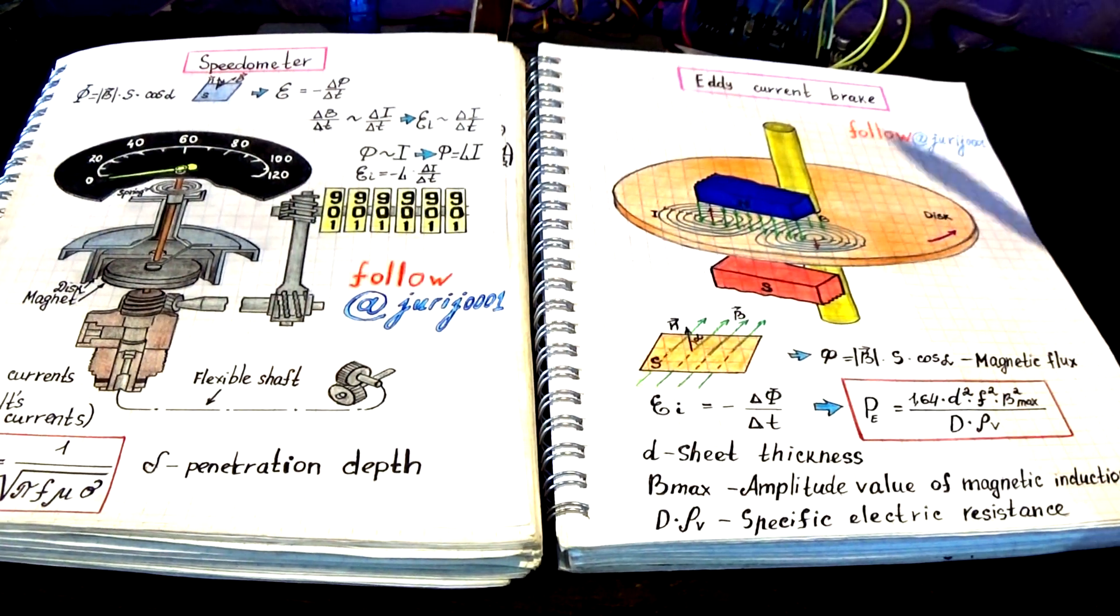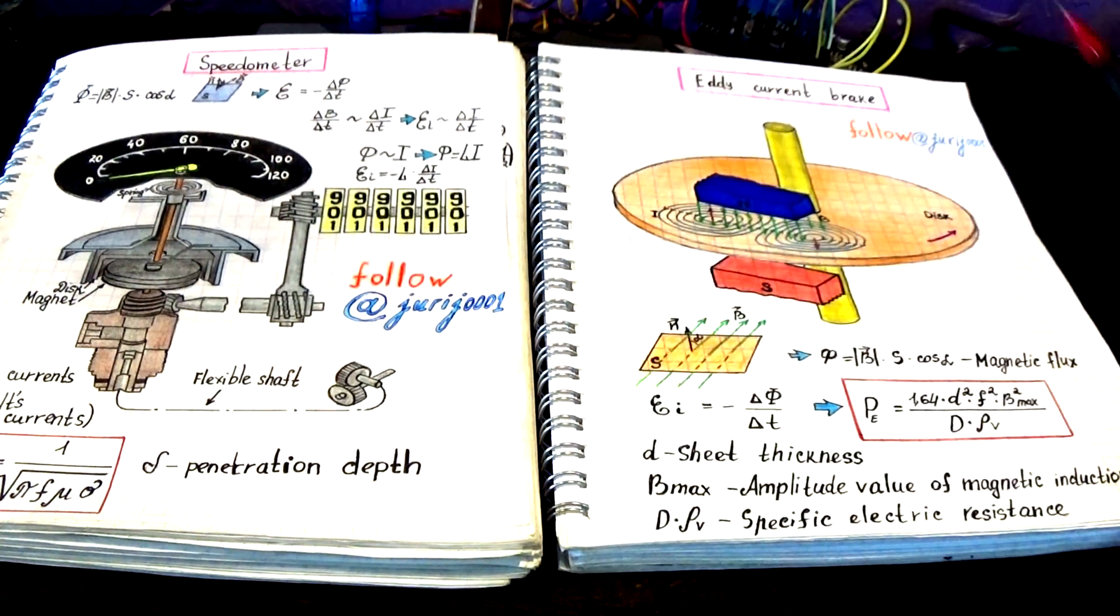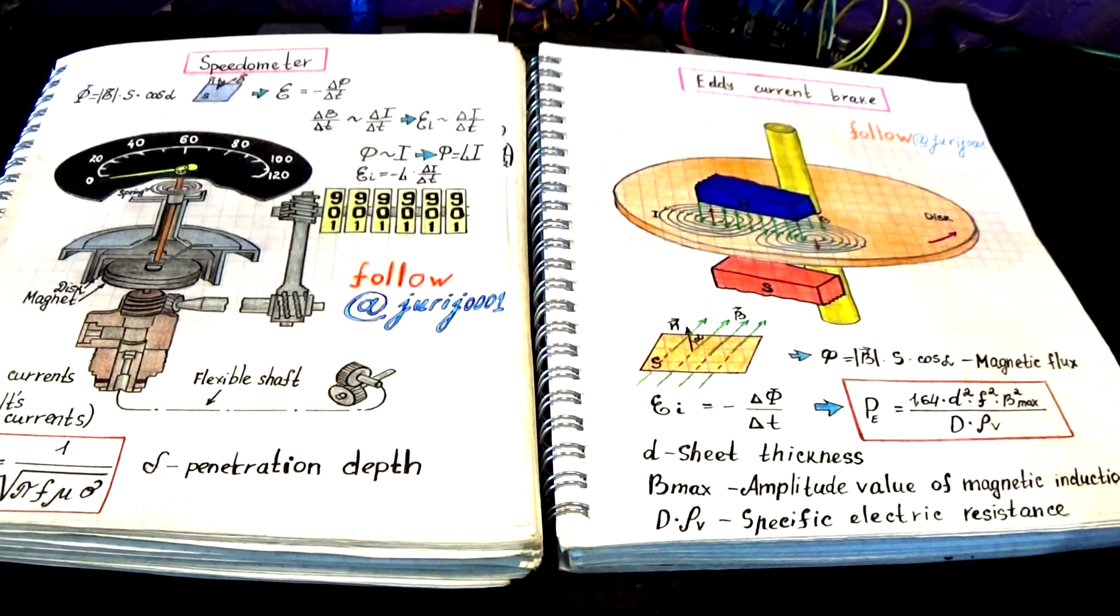This property is used in the operation of the speedometer or magnetic brake. Let's take an aluminum disc and a magnet and do some simple experiments.